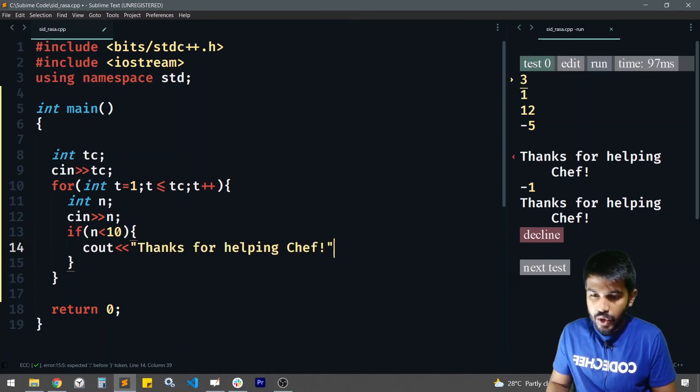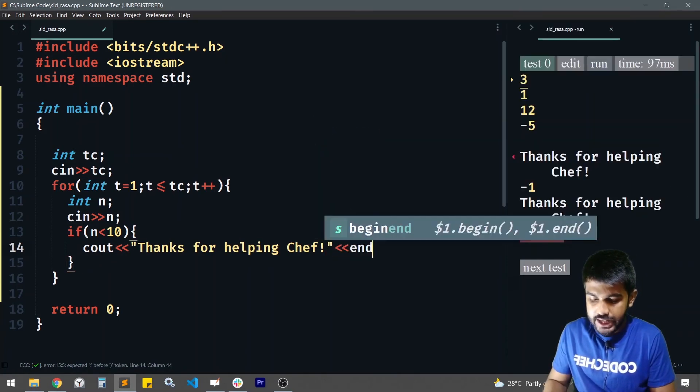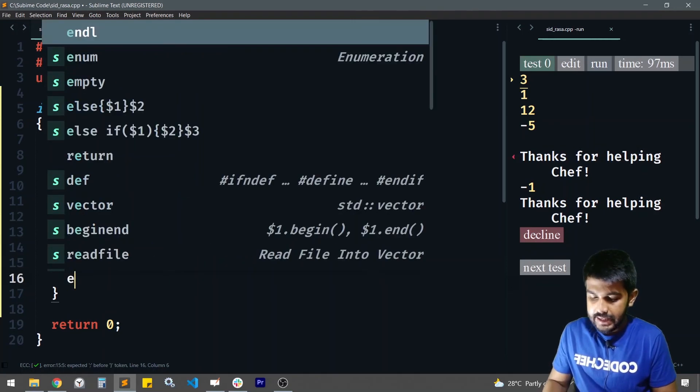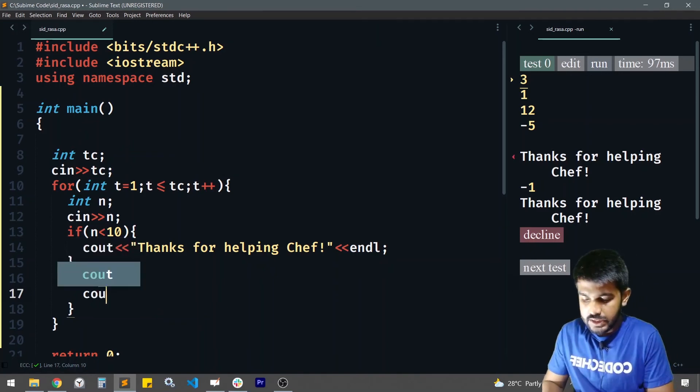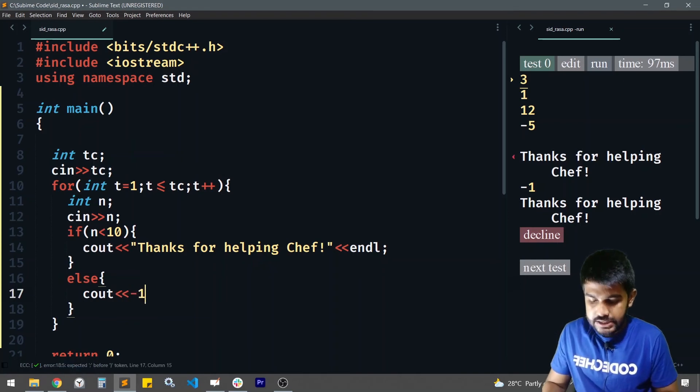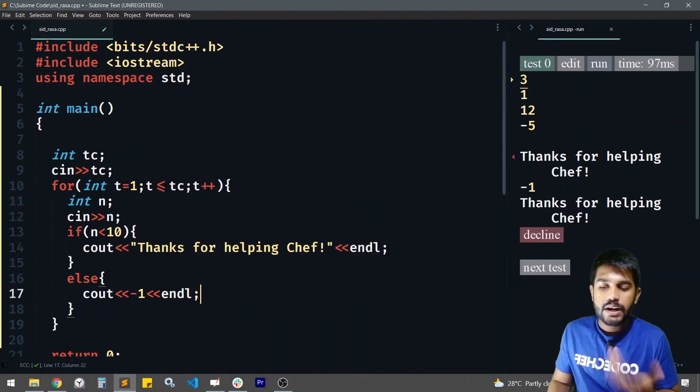And then we would be printing it with an end line, and then if it is not the case, then we would just be printing minus 1 and then the end line. Minus 1 and then end line itself. Now let us run this on the sample test cases.